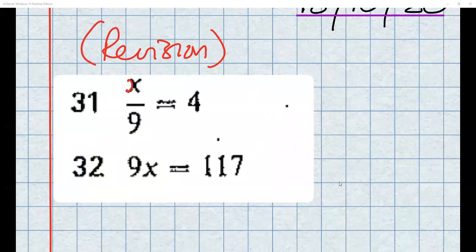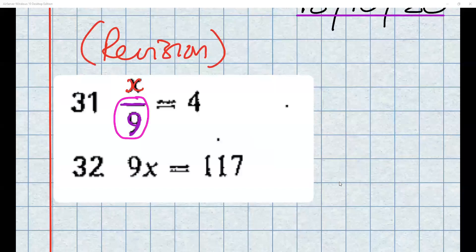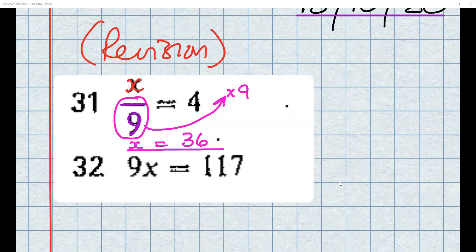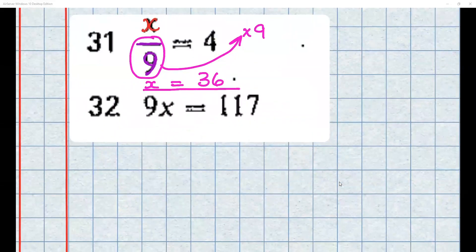We need to work out the value of x. What's being done to x? What you do first is nine times four. The reason why you've done nine times by four is because opposite of divide by nine is times by nine. So then we can say x is equal to 36. Fantastic.